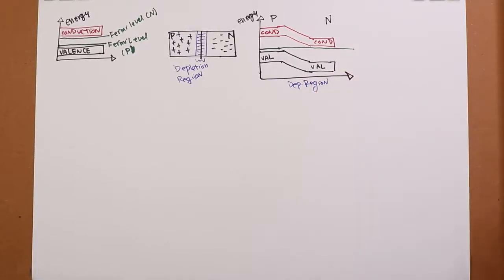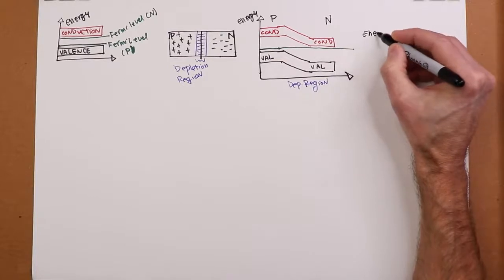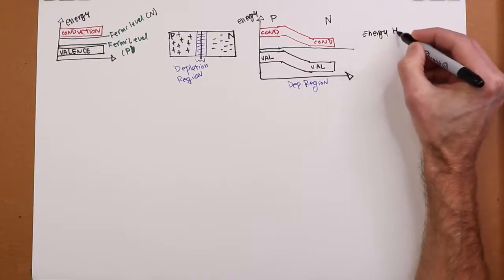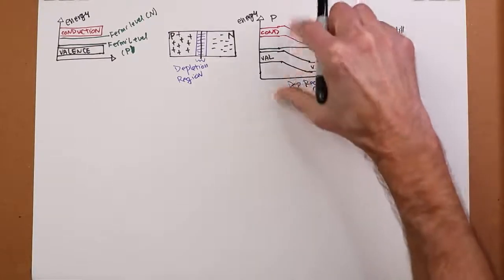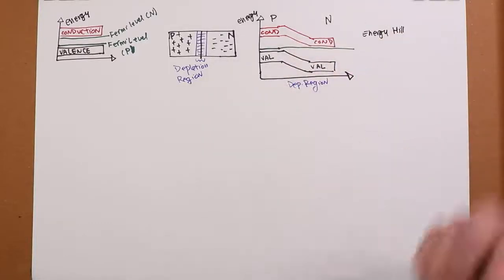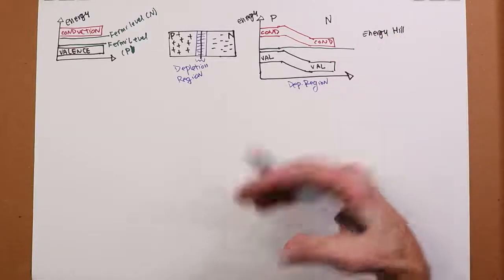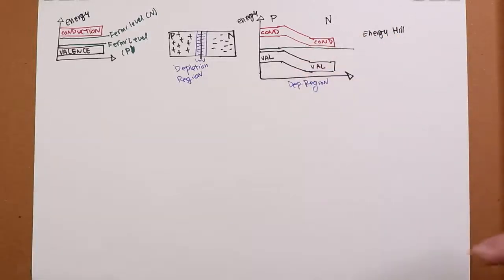And what this makes essentially is an energy hill. Think of this as an energy hill. The size of this will actually depend on the material. As you'll see, different values for silicon versus some other material.